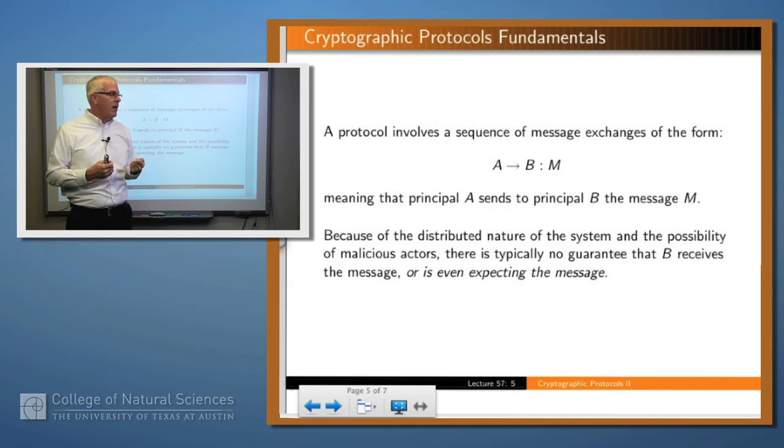So for example, here we have A sends to B the message M. Now that happens, but because of the distributed nature of the environment and the hostile nature of the environment, we don't know for sure that B receives the message. So all this step in the protocol is telling us is that A created that message and sent it, but not that B receives it.